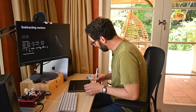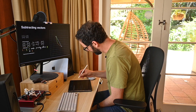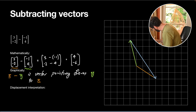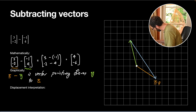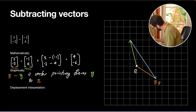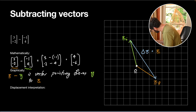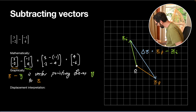In the context of displacement: if we think of these as positions, the final position xf minus the initial position gives us the displacement — the vector that points from the initial position to the final position, as discussed in our displacements video.